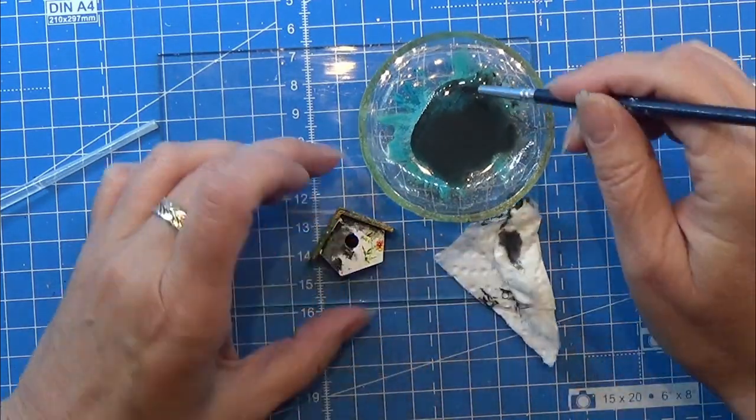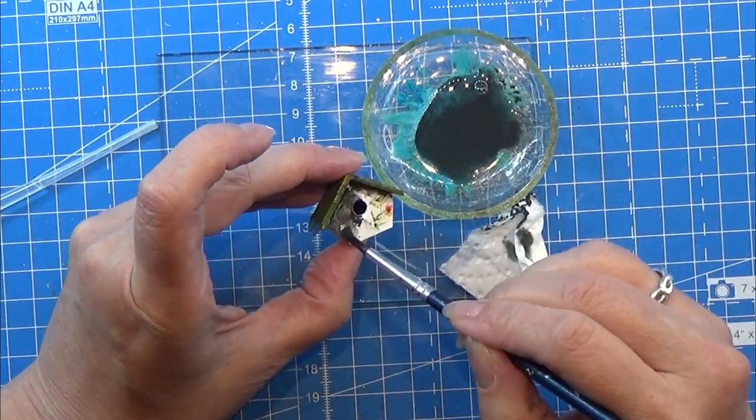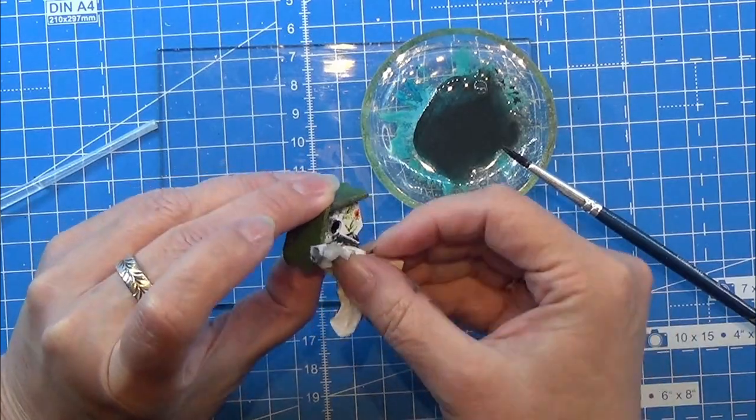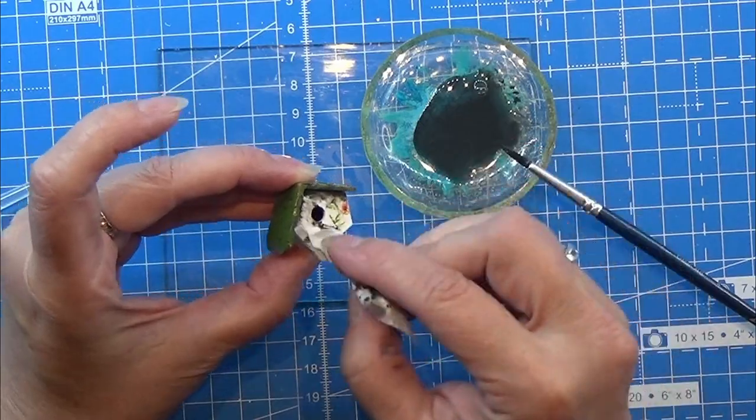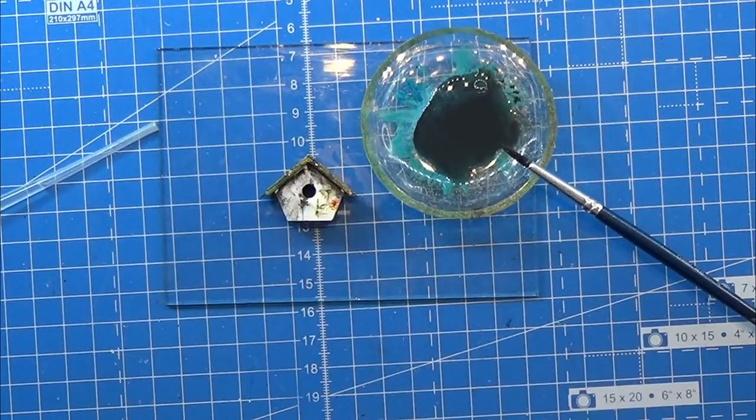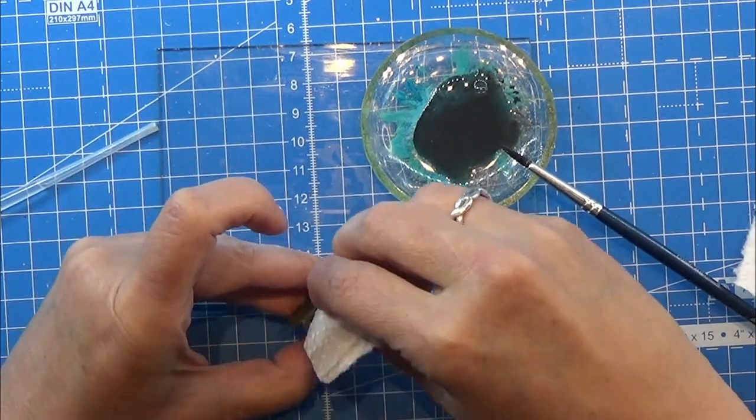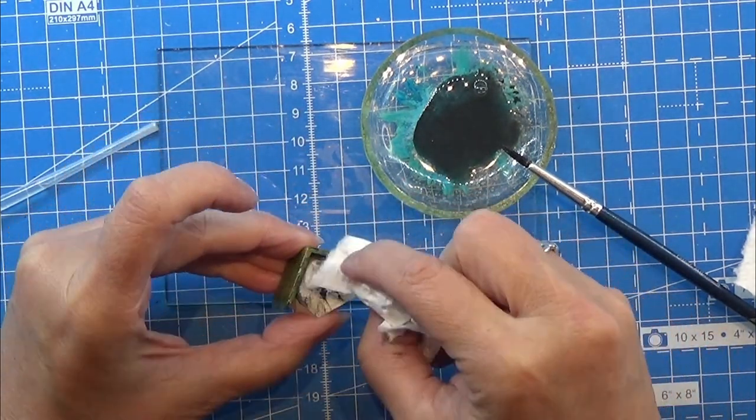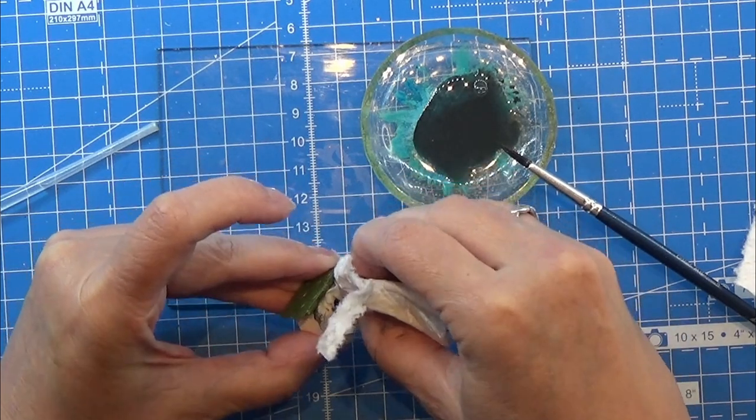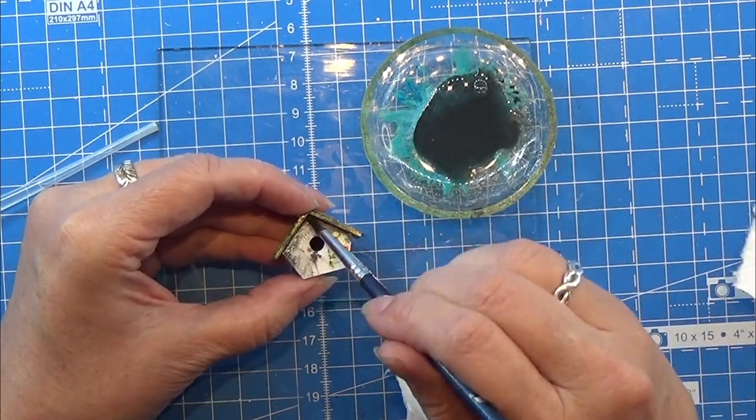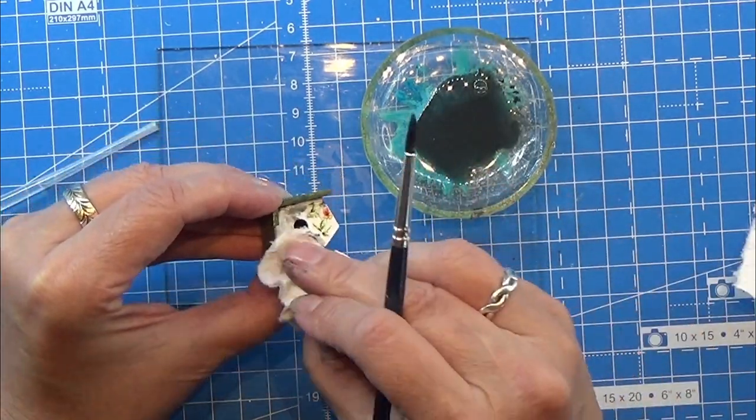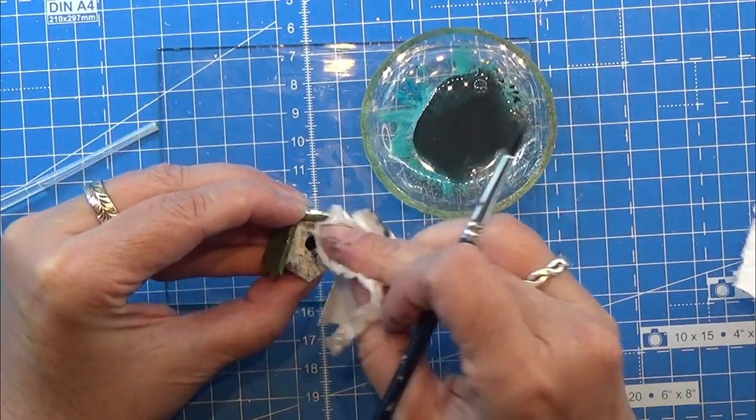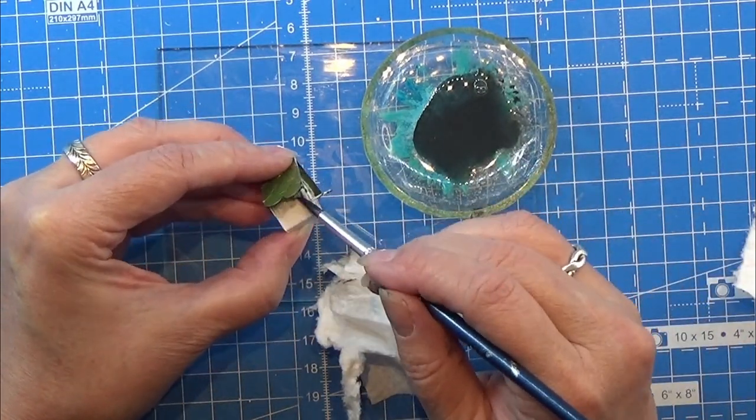I decided to age my little birdhouse a bit. As you see, I got a little too much of the black into my water mix to make the aging. I am mixing a tiny, tiny, tiny bit of black with quite a lot of water, and then I am placing it on where I want to age and then removing a tiny bit of it with my towel here.